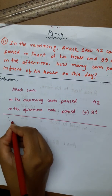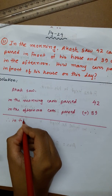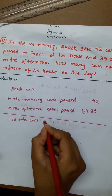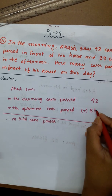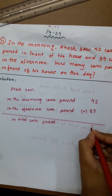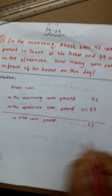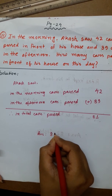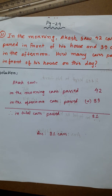Therefore, in total, cars passed: 9 plus 2 is 11. 3 and 1 is 4, plus 4 is 8. So the answer is 81 cars.